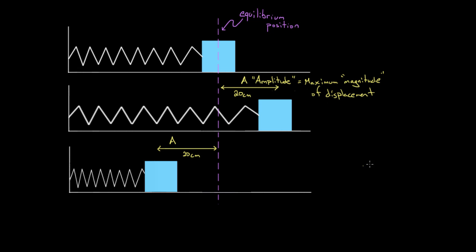Now there's another term you gotta get used to, and that's the period. The period is represented with a capital T. Why is the period represented with a capital T when there's no T in the word period? I'm not sure, but capital T is kind of like time. What the period means is the time required for an entire cycle.